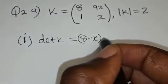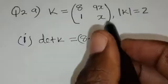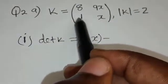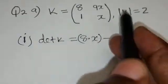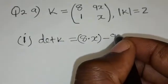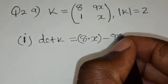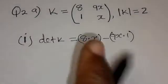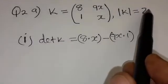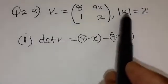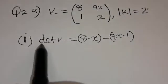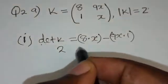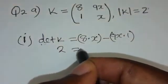Then minus — you also multiply the minor diagonal elements — 9X times 1. We have been given the determinant of the matrix K as 2, so where there is the determinant of K, we're going to put a 2.